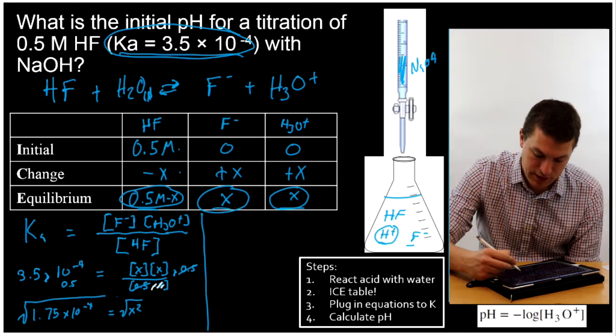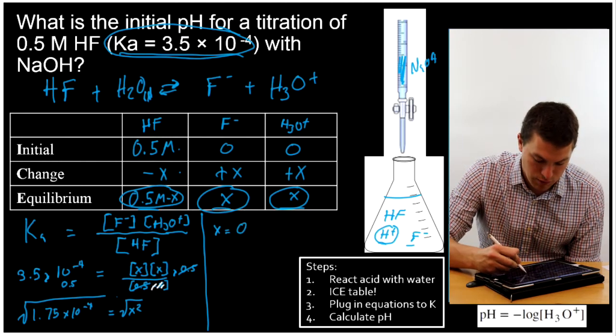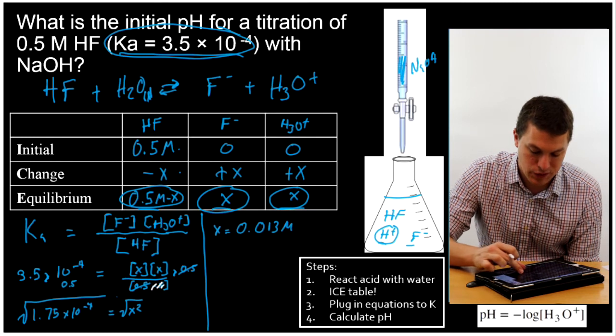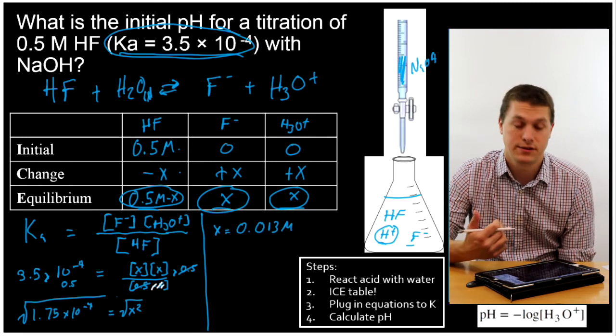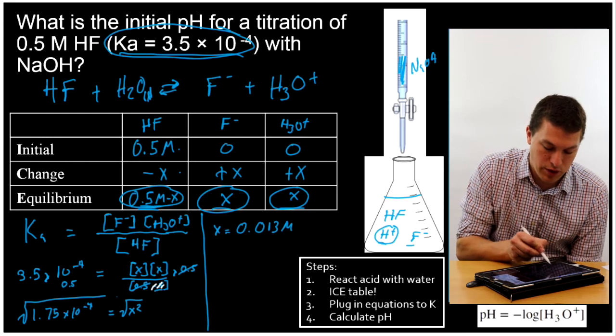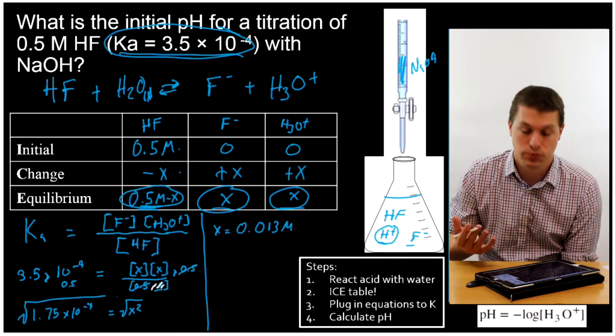So what that's going to give me is X is equal to 0.013 molar. So X is pretty small. And that's the whole reason we could drop X there. Because notice that my 0.5 molar minus X is going to be basically 0.5 still. So that X is pretty small, so we can neglect it.